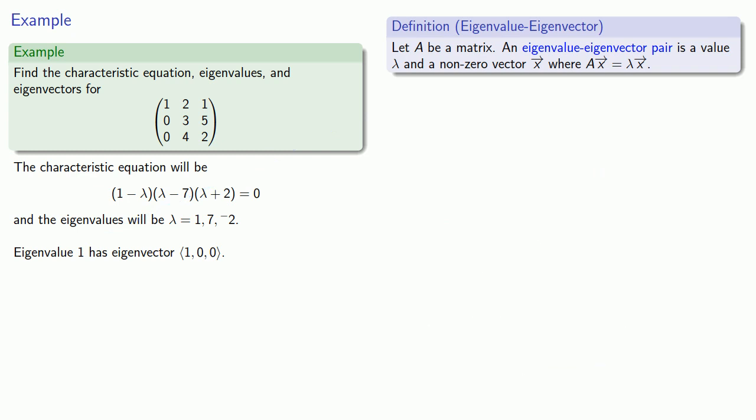Similarly, if I take the eigenvalue lambda equals negative 2, our system of equations is going to be matrix applied to (x1, x2, x3) equals negative 2 times (x1, x2, x3).